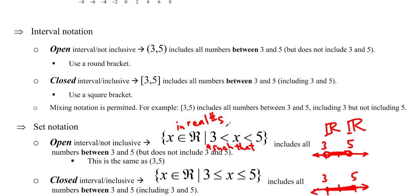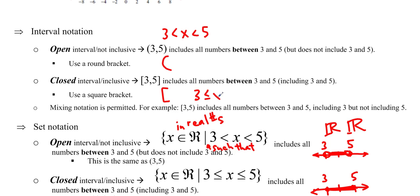Interval notation is another way of writing the same thing. Parentheses (open brackets) mean we're not including the endpoints — so (3, 5) is the same as 3 less than x less than 5. Square brackets (closed brackets) mean the number is included — think of it as grasping onto that number. So [3, 5] means 3 ≤ x ≤ 5, and you can mix them: [3, 5) means 3 ≤ x less than 5.